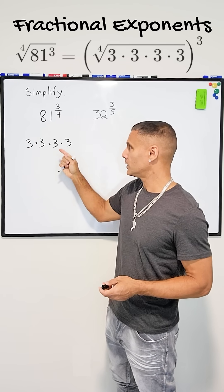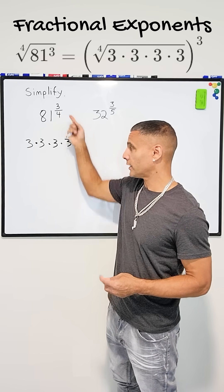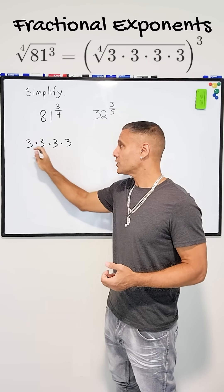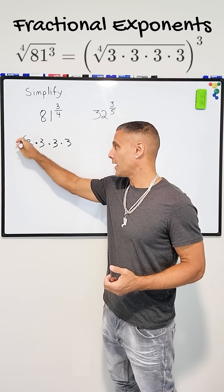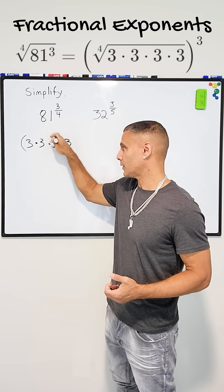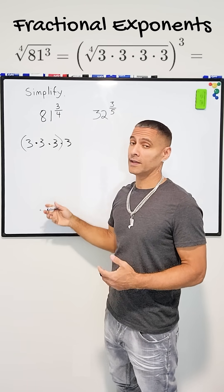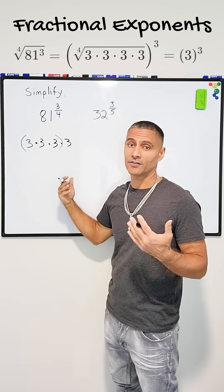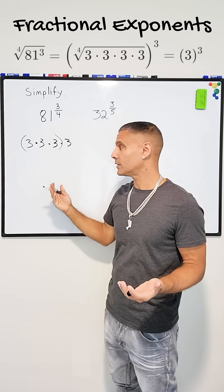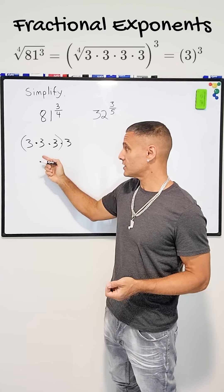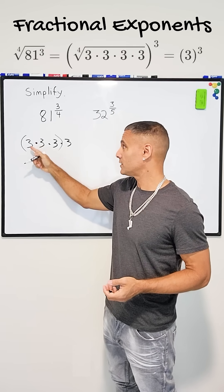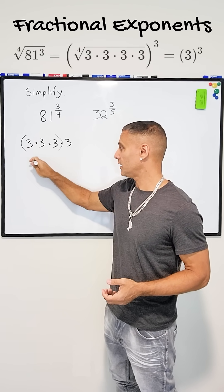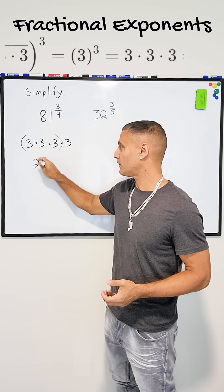Then I like to look at the numerator, which in this case is three, and I just group that many threes and multiply them out — that gives our answer. Basically, we're just taking three to the third power, which is 27.